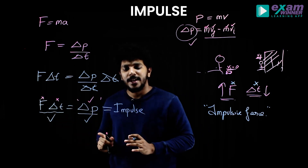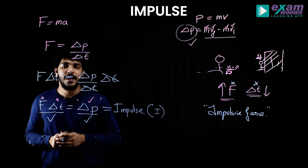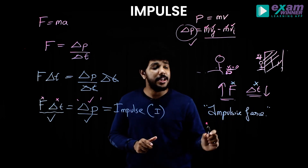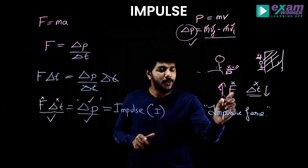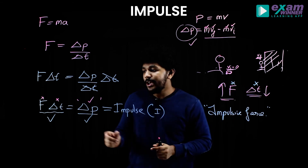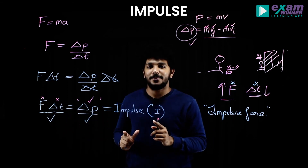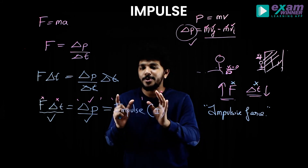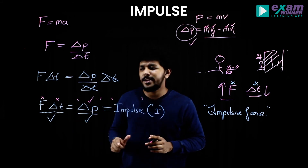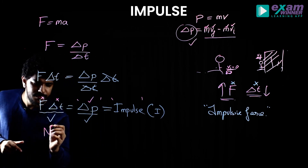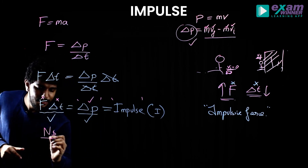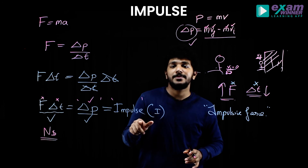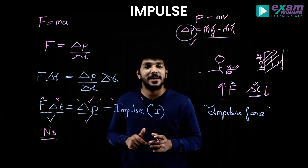What does it mean? Impulse is a whole quantity — we have an impulsive force that acts for a very small time. We cannot measure force or time individually, but force into time gives us change in momentum. The unit of impulse is Newton times seconds. This is the whole concept of impulse — make this idea clear.